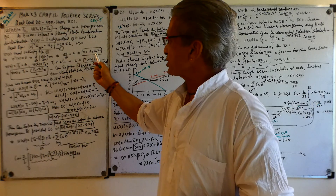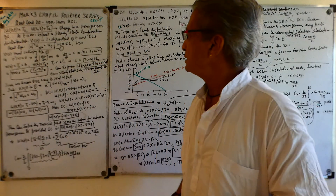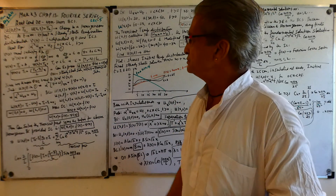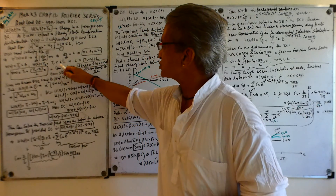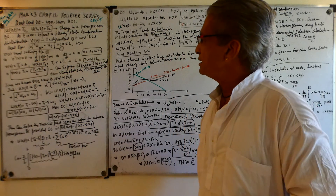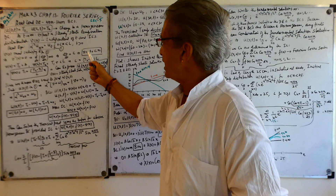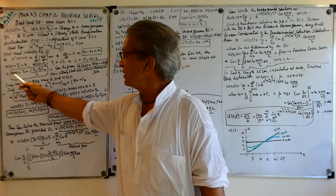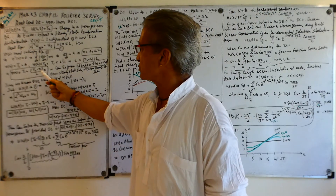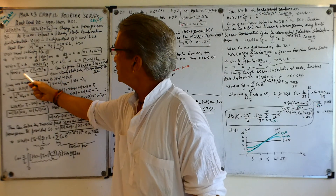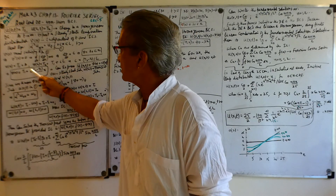At x=0, V = T1, so a = T1. At x=L, V = T2, so c = (T2 - T1)/L. Substituting, V(x) = T1 + (T2 - T1)/L · x. Checking: at x=0 you get T1, and at x=L the x-term cancels giving T2 — exactly what we want.